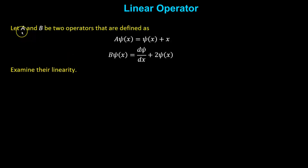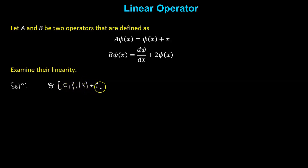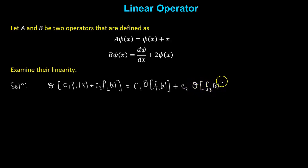In this problem, we are provided with two operators, a and b, and they are defined by this particular definition. Now we need to check the linearity. So let's first state the linearity property. Suppose we have an operator o, then the property of linearity states that if o acts on the linear combination c1 times f1(x) plus c2 times f2(x), then it must equal c1 times o acting on f1(x) plus c2 times o acting on f2(x), where c1 and c2 are constant coefficients.